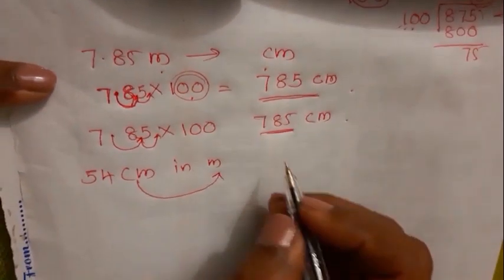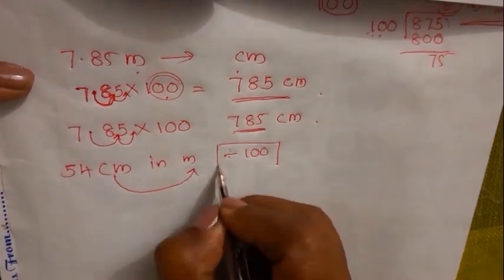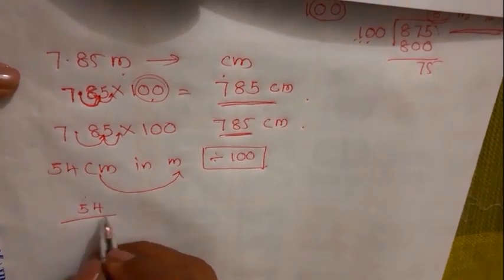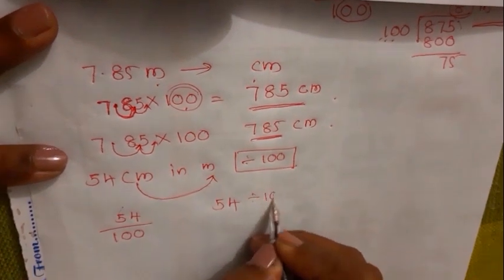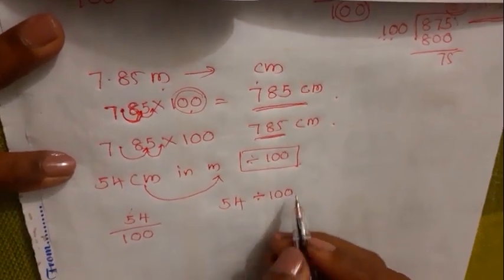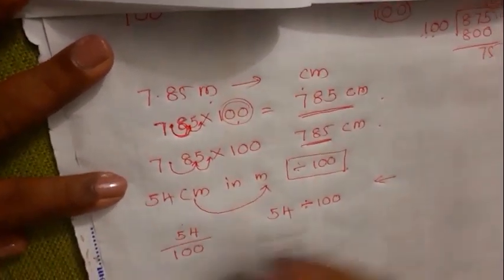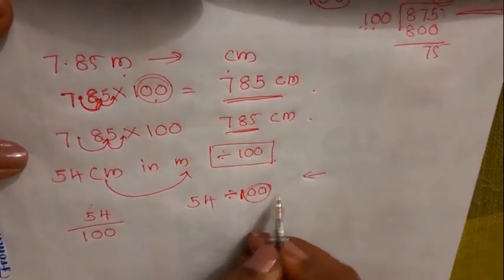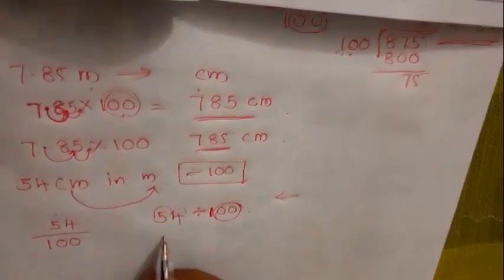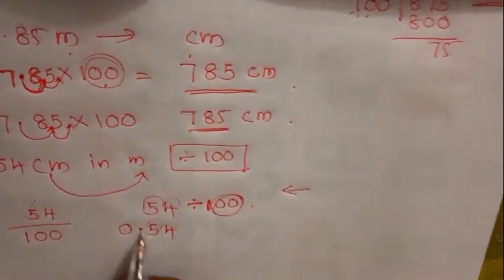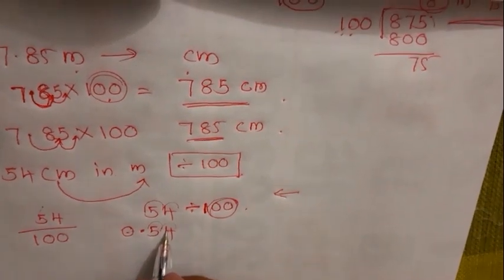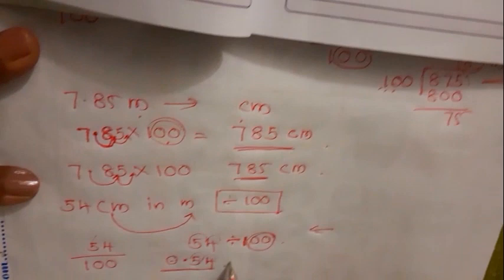Example 6: Express 54 centimeters in meters. Centimeters into meters — divide by 100. When you divide, you move the decimal point from right to left two places, because you divide by 100. So 54 becomes 0.54 — you add a 0 to separate the whole number and decimal. The answer is 0.54 meters.